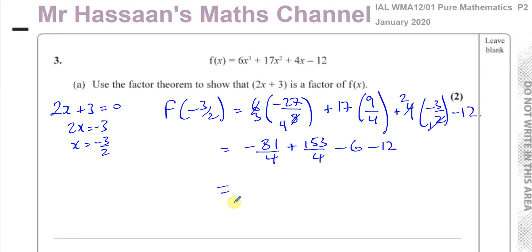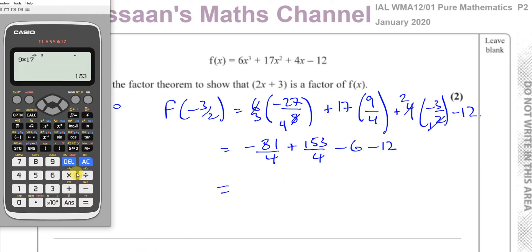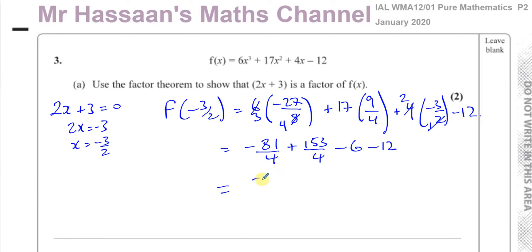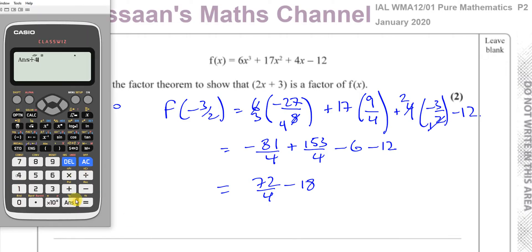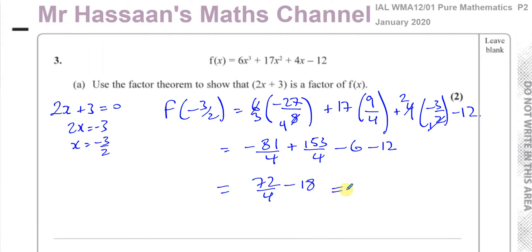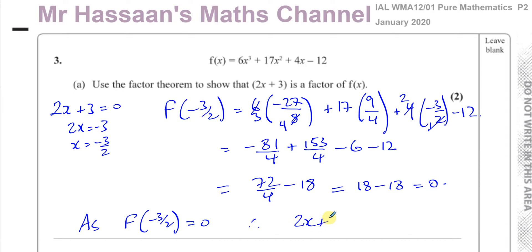And minus 12. So now we have 153 minus 81, which gives us 72, so 72 over 4, minus 18. 72 over 4 is 18, so that gives you 18 minus 18, which is 0. So we can say f(−3/2) equals 0, therefore 2x plus 3 is a factor. You should write a statement like that showing it.